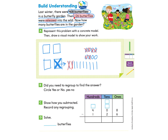We're not finished yet — we need to take away 100. Now we only have 3 hundreds, and we need to take 1 of them away, so we go ahead and cross out 100. What do we have left? We have 2 hundreds, 8 tens, and 2 ones. So we have 282 butterflies still left. Part B asks: did you need to regroup to find the answer? Yes, we did need to regroup, so we circle yes.